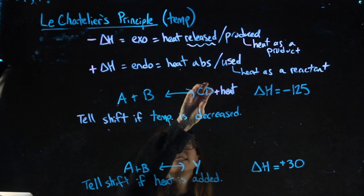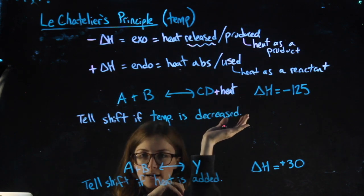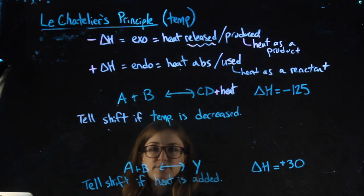Let's say I decreased the amount of CD. If I said, tell the shift if I decrease CD. Well, that would be a hole on the right. So I would shift right to fill it.